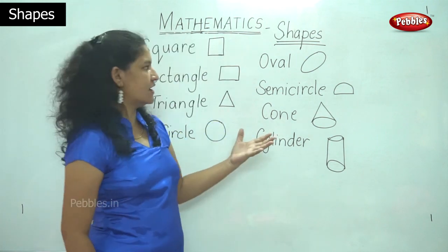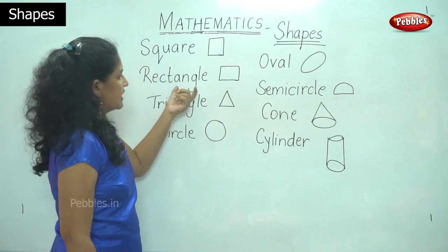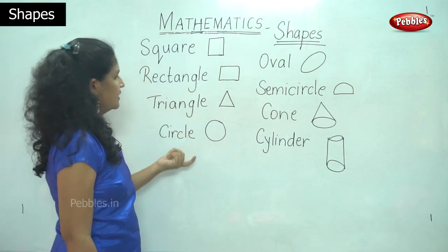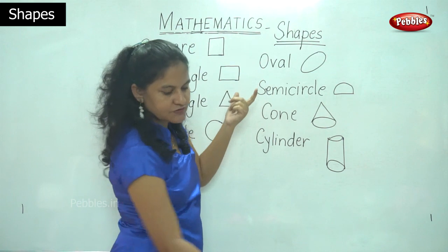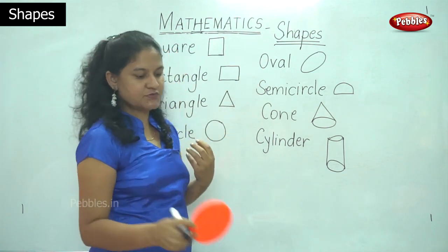So these are the different shapes that we have studied. So example is the square, the rectangle, the triangle, the circle, the oval. As I have told you, the oval, the example of an oval is the egg that we eat.